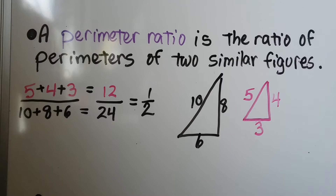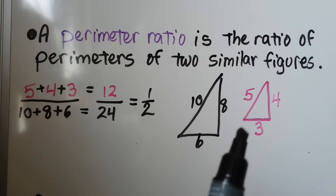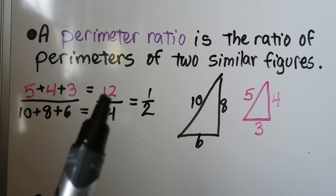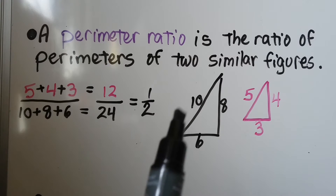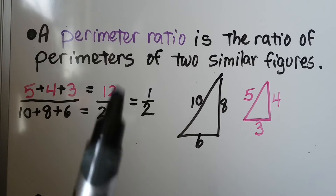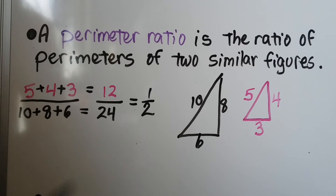A perimeter ratio is the ratio of perimeters of two similar figures. Using the same two similar triangles, the perimeter of the pink one is 5 plus 4 plus 3, which is 12. The black one is 10 plus 8 plus 6, which is 24. Our perimeter ratio is one half, just like the similarity ratio.